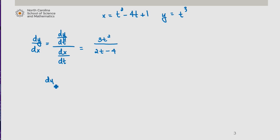Since we're interested in the slope when t = 3, we'll evaluate this when t = 3. That gives us 27/2.